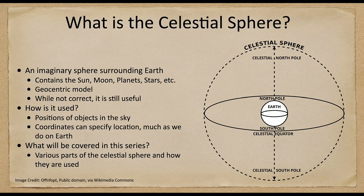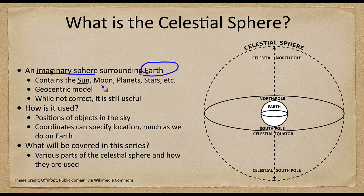So what is the celestial sphere? Well, essentially it is an imaginary sphere around the earth — it surrounds Earth, and that's what we see when we look up at the sky. When you lay out at night and take a look up at the sky, you're seeing the celestial sphere, and that's where it seems like everything is located. It seems like the sun, the moon, the planets, and the stars are all located on this great sphere that orbits around Earth.